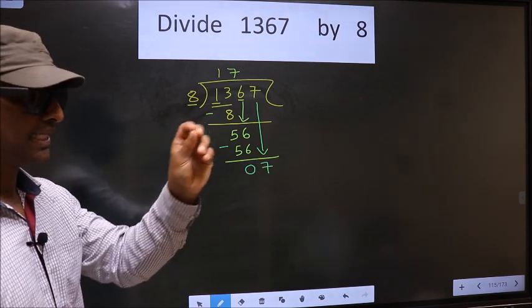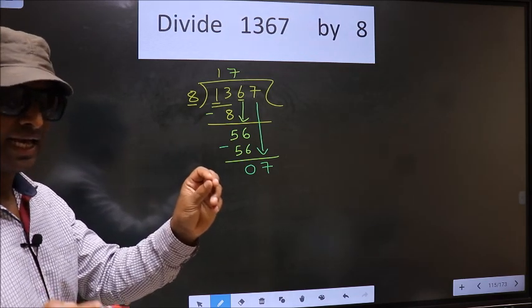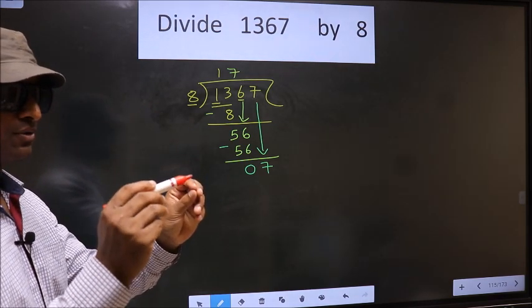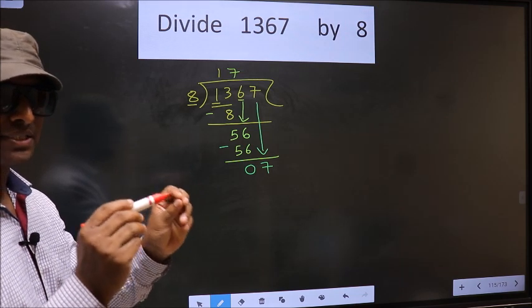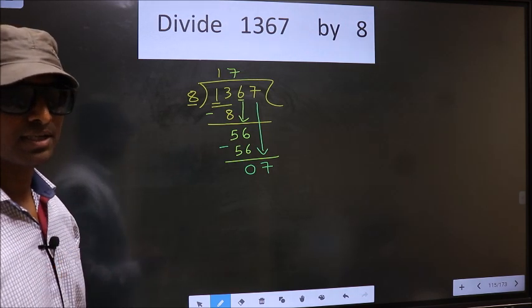I repeat: bringing the number down and putting a dot and taking 0, both at the same step, you are not supposed to do.